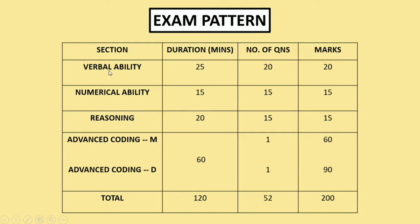The topics for verbal ability are: sentence jumbles, synonyms and antonyms, spot the error, idioms, paragraph (reading comprehension), phrase completion, fill in the blanks, and direct/indirect or active/passive voice. These are the topics you will be tested on in verbal ability.